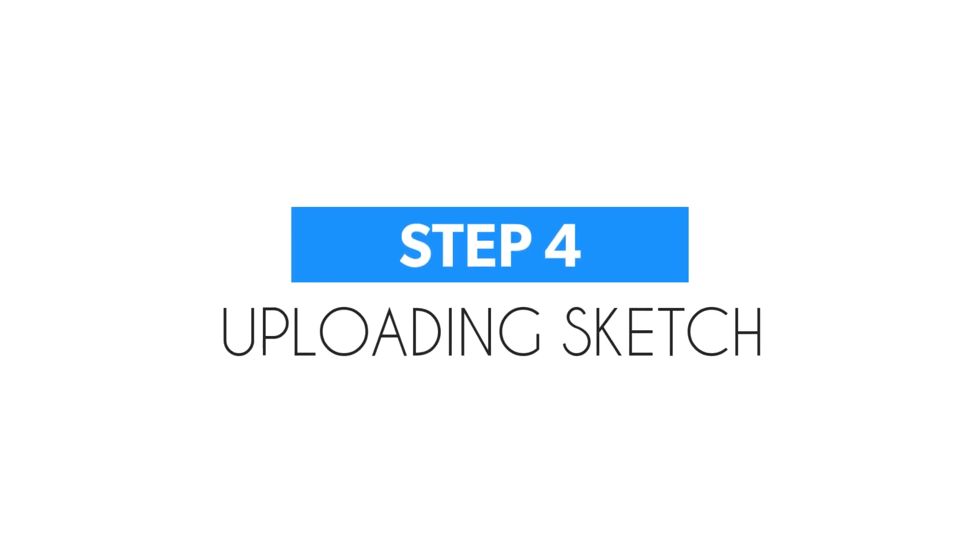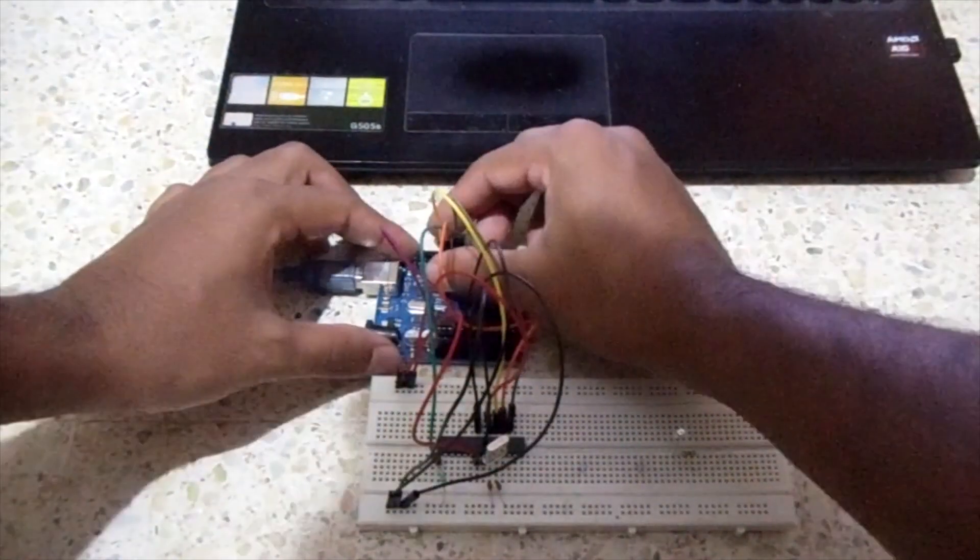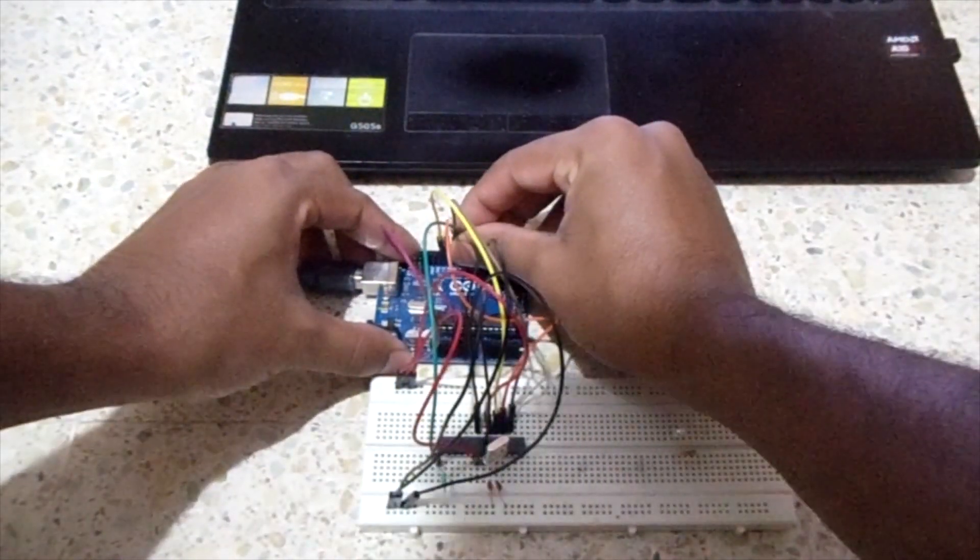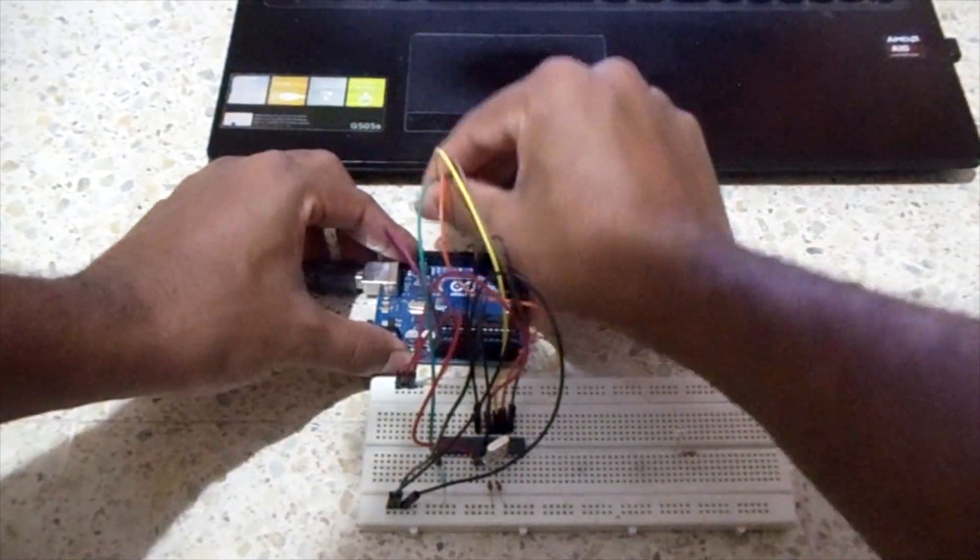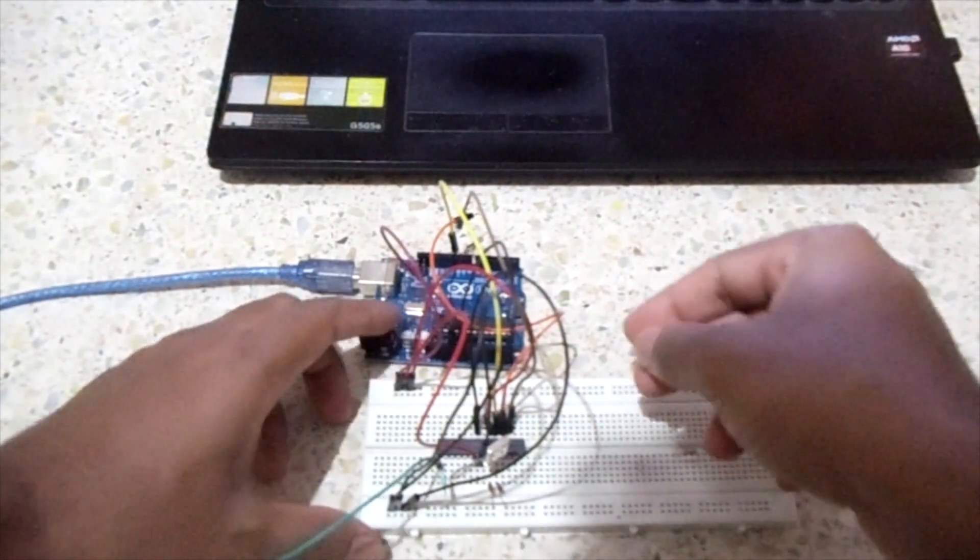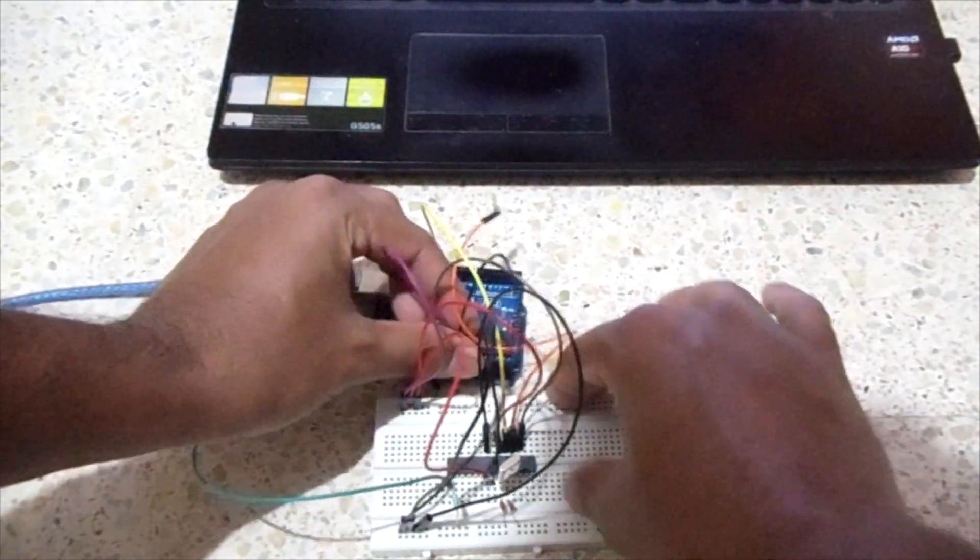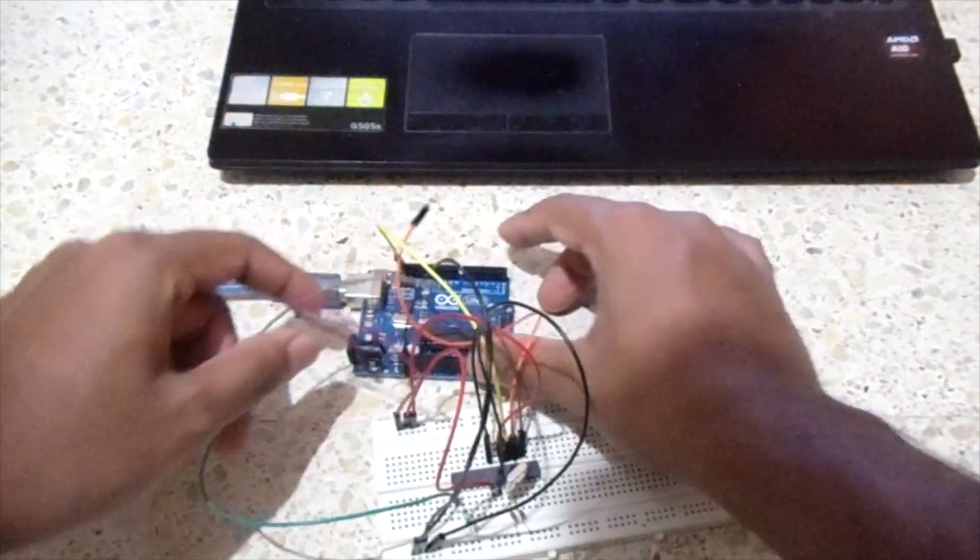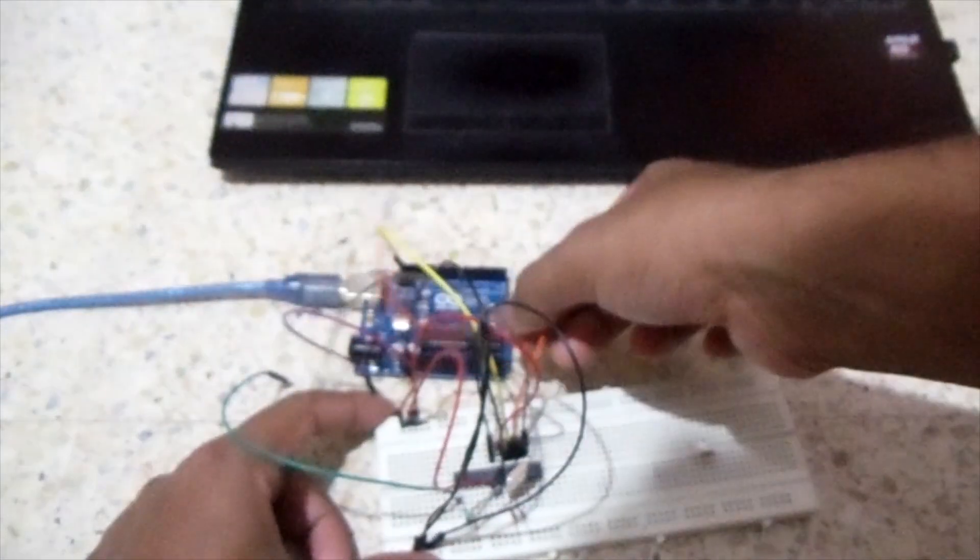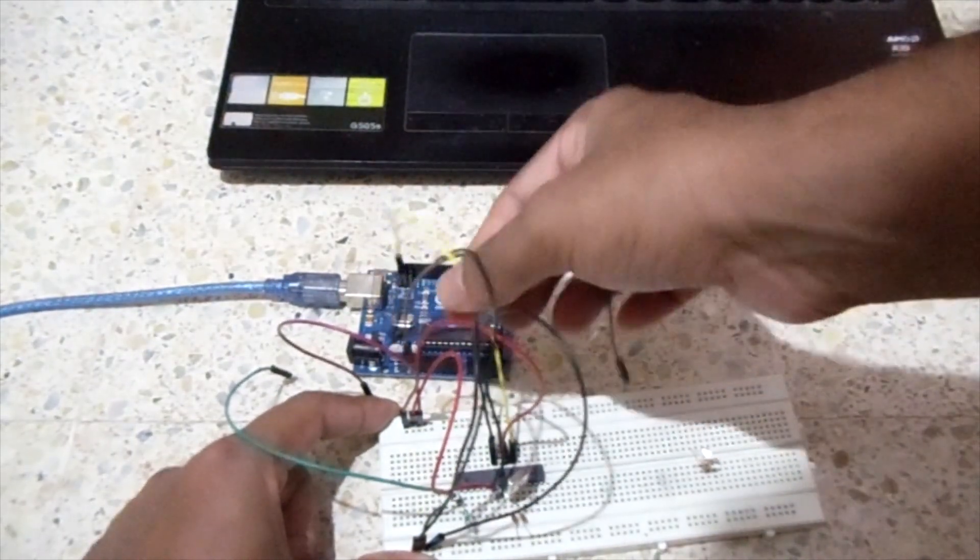Step 4 is uploading the sketch. For uploading the sketch we have to make a few changes. First we have to remove the jumper wires from pin 10, pin 11, pin 12, and pin 13 of the Arduino Uno. And we also have to remove the wires from pin 17, pin 18, pin 19 of ATmega328P. Everything else remains the same.